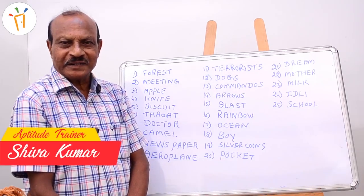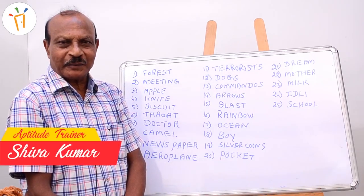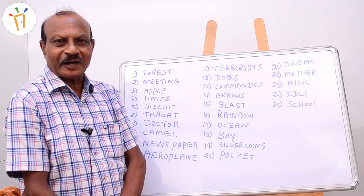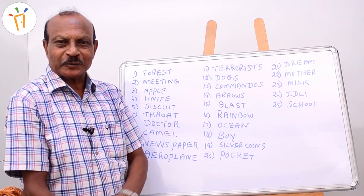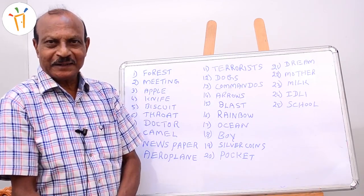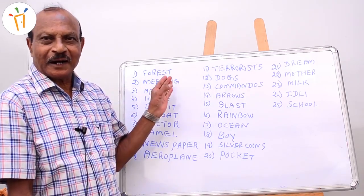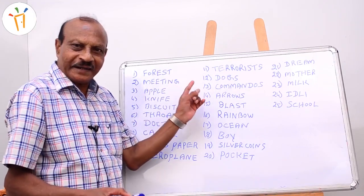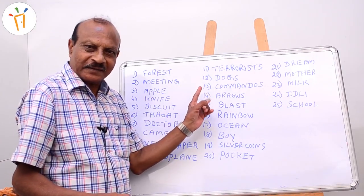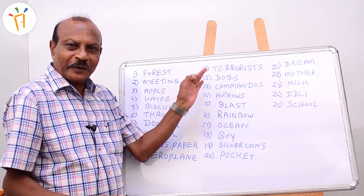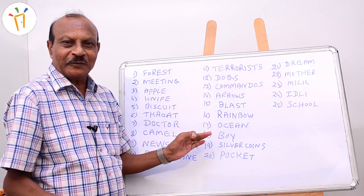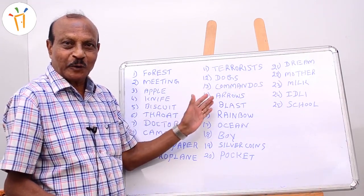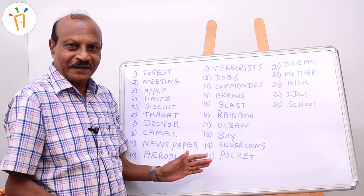I am Shookumar from Tumkor, which is 80 kilometers from Bangalore. I have come here to freshersworld.com to explain some memory techniques. I have written 25 words on the board, and I will show you how to memorize these 25 words and recall them without looking at the board.